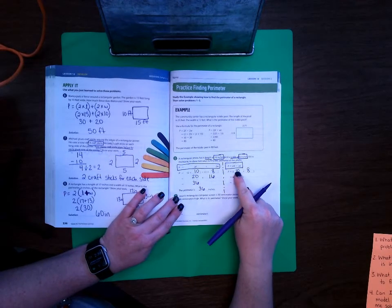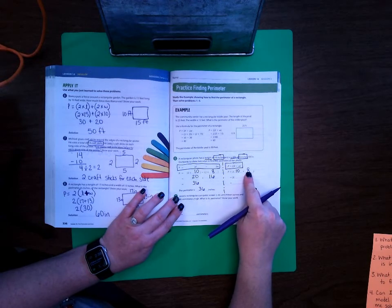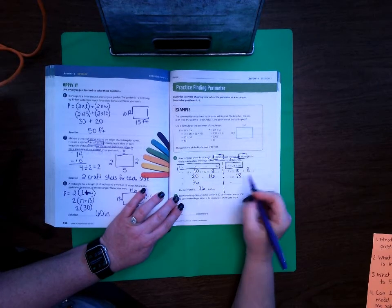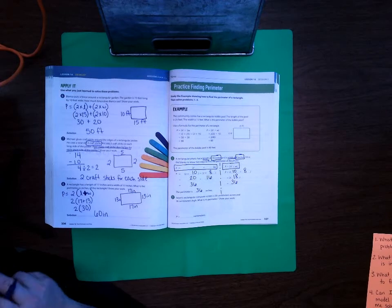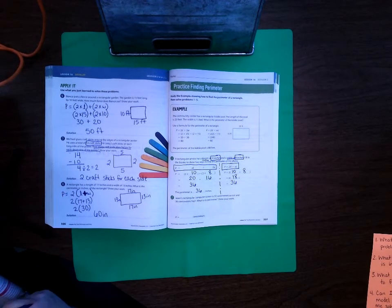Now if I solve it over here, we've got to do 10 plus 8 first, which is 18. And then we do 2 times 18, which is 36. So no matter which way we solve a problem for perimeter, we're going to get the same answer.